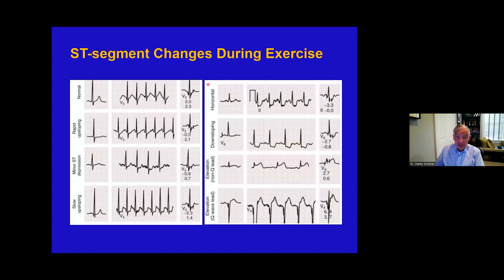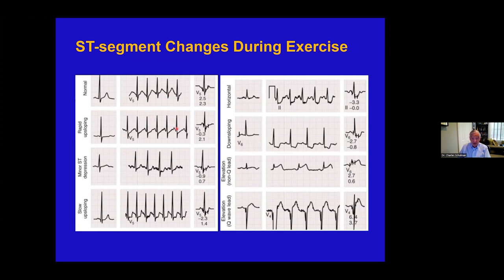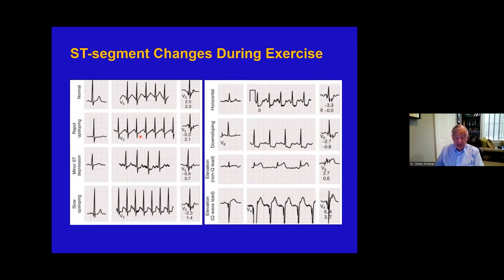These are the ECG findings — ST segment changes during exercise. This is normal at very high heart rates over 150. Rapid upsloping is really normal. Minor ST depression can be seen; if it disappears within the first minute, it's probably normal but not necessarily. Slow upsloping, horizontal, or downsloping ST changes are probably abnormal, as is ST elevation in the non-Q-wave lead.